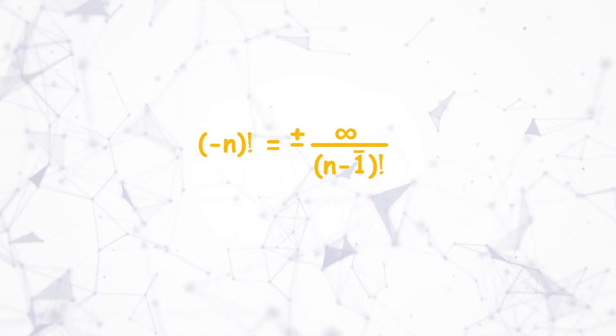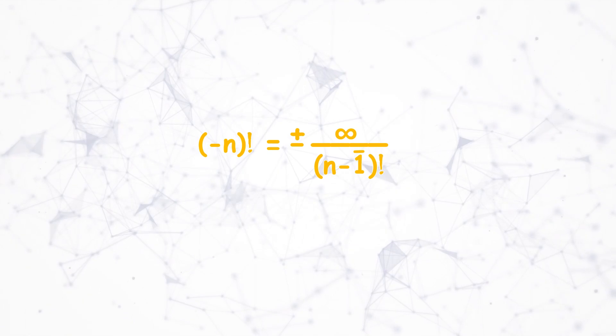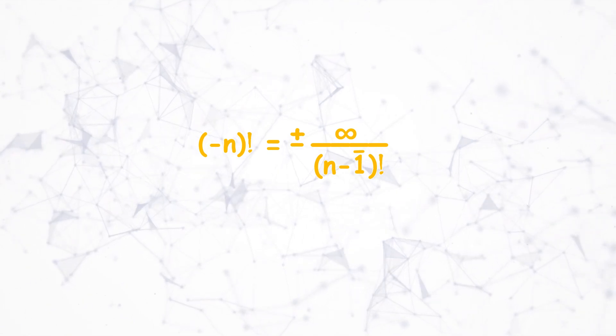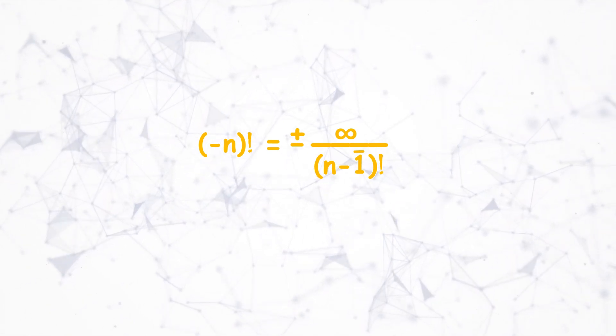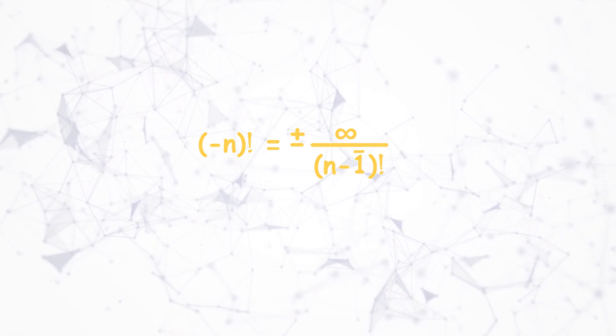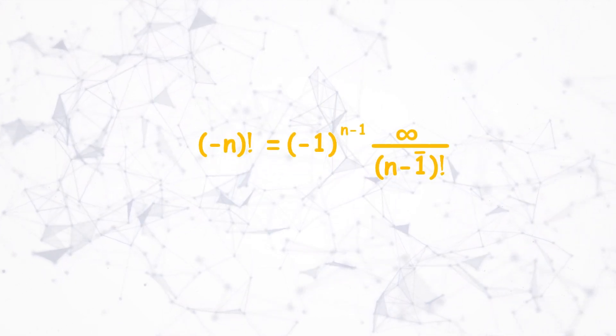But why is there a plus or minus sign? Actually the signs will alternate from positive to negative and vice versa for every increment of n. So it can be expressed as this principle solution.